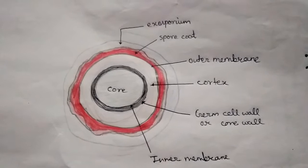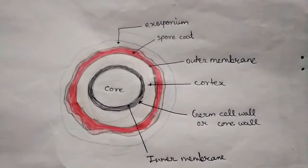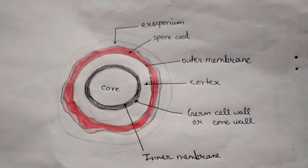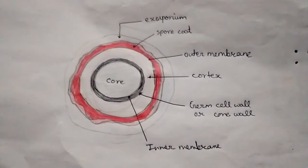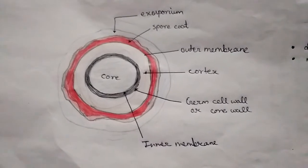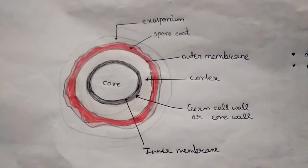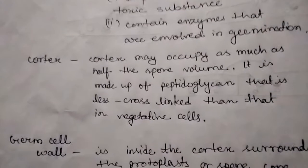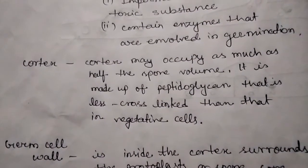Beneath the outer membrane there is a very thick layer of cortex. Cortex is made up of specialized peptidoglycan layer which is less cross-linked than that in vegetative cells. Cortex may occupy as much as half the spore volume.